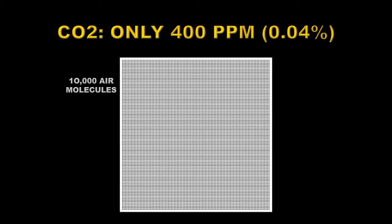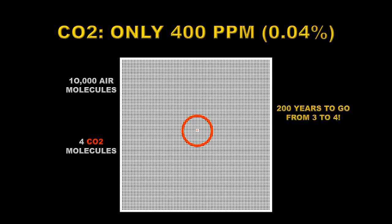If we take 10,000 molecules of air represented by these black dots in this square, let's see how many of those are carbon dioxide — it's just four: those four little red dots in the middle. That doesn't seem like much at all, and worse yet, it's taken over 200 years to get from 270 parts per million to over 400 parts per million. So where's the big problem?